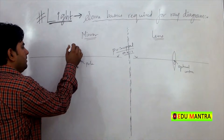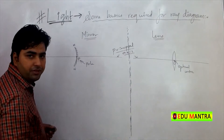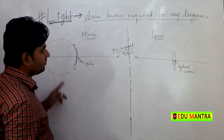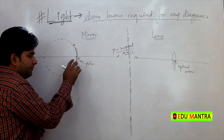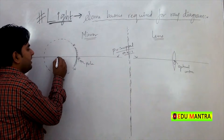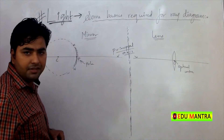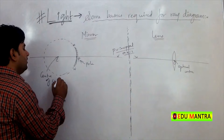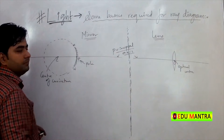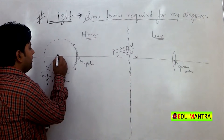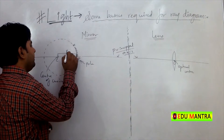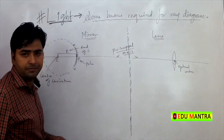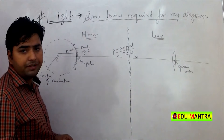Iske alawa, yeh agar koi spherical shape hai, jo iska koi na koi ek imaginary sphere bhi hoga jis se yeh belong karta hoga, usko curvature ka sphere hoga. So, us imaginary sphere ka, is mirror ke, us imaginary sphere ka jo center hai — what is that center represented by? C se represent karte hain. Aur us point ko kaha jata hai? Center of curvature, it is called center of curvature. And center se leke jo pole ka distance hai, it is represented by R. What is that? It is the radius of curvature. Center se pole ka distance sa usko radius of curvature kaha jata hai.